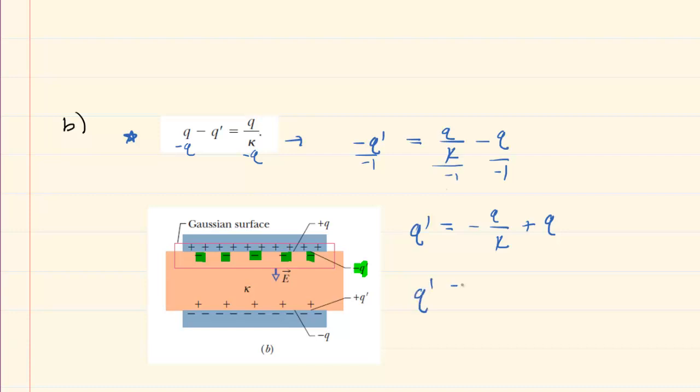So now you have Q prime equals negative Q over kappa plus Q. And if we wish, we can factor out a Q here just to simplify it a little bit. So then we would be left with negative 1 over kappa plus 1. And so all we have to do now is plug in the kappa, which we found in part A, that was the dielectric constant, and then Q, which was the amount of free charge on each plate.